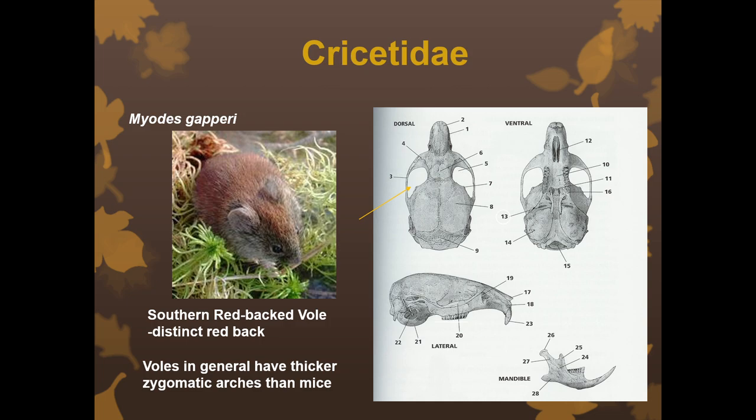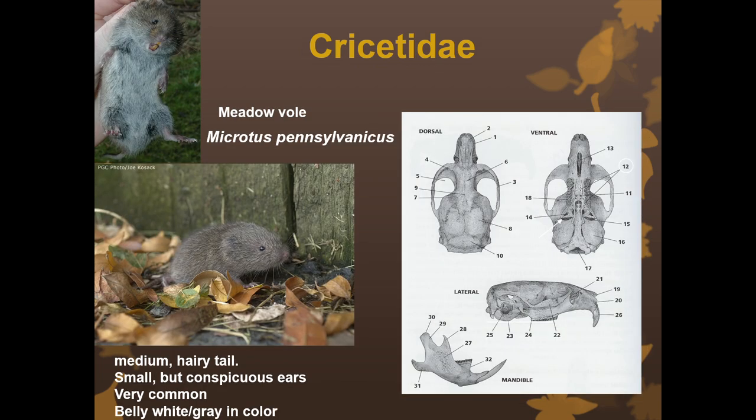Next we look at a couple of voles. First is Myodes gapperi, our southern red-backed vole. They have a very distinct red back with gray sides — that bicolor pattern is really pronounced and easy to see in person. It's also important to note that voles in general have thicker zygomatic arches than mice, so when looking at skulls you can tell the difference from a mouse skull fairly easily. For this species, look for that distinct red back and the thicker zygomatic arch.